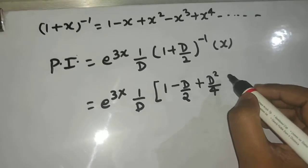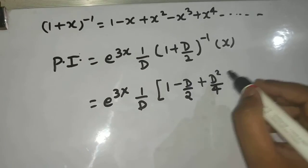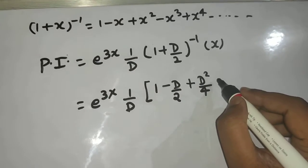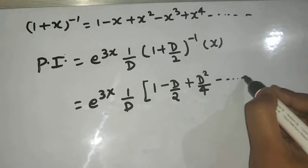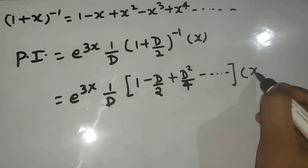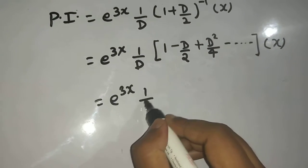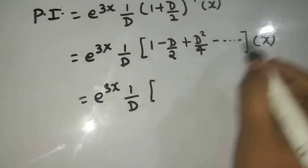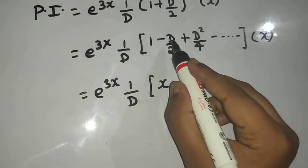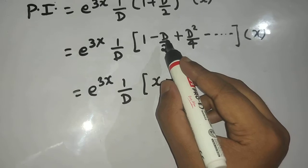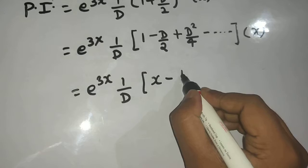Okay, no need to go for the higher derivative, even for the second derivative. So after that I can write minus and so on, operating on x. So this is e power 3x, 1 upon d. Now bring this x inside. So x minus derivative of x is 1. This is simply d of x by 2, so derivative of x is 1 by 2.